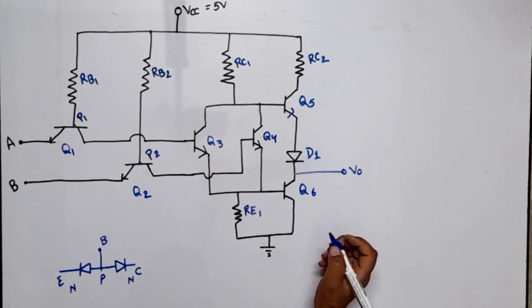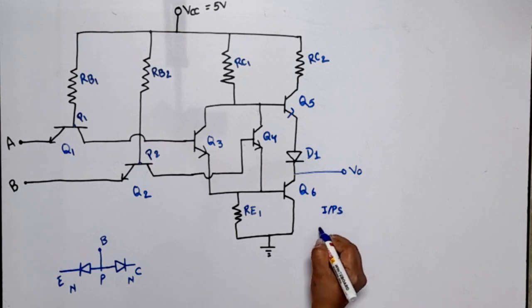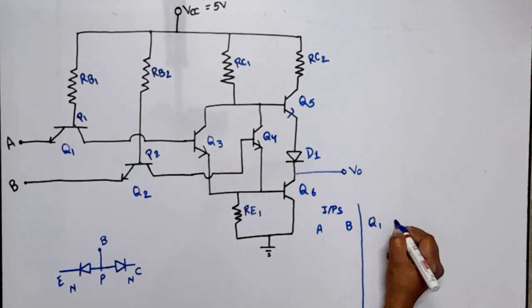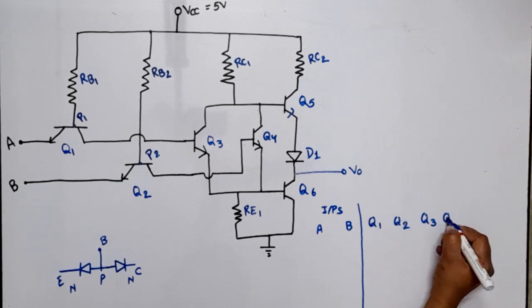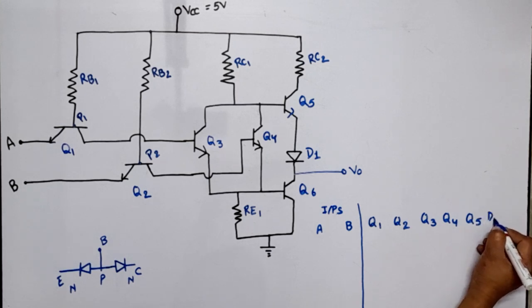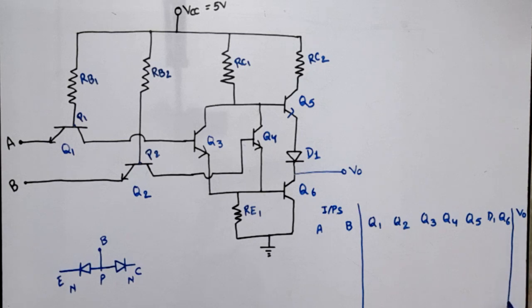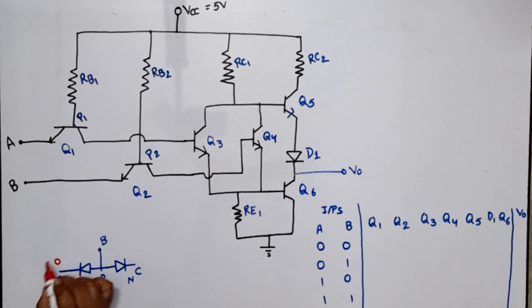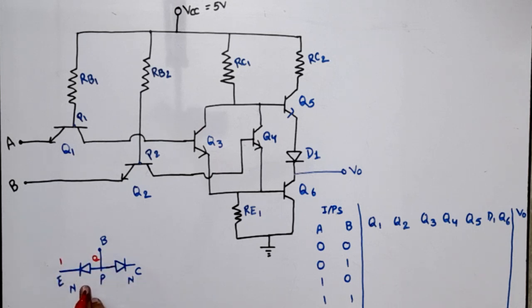Now we will make a summary table. The inputs are A and B, and accordingly we will see the status of transistors Q1, Q2, Q3, Q4, Q5, D1, and Q6, and the final output. The input combinations will be: 0-0, 0-1, 1-0, and 1-1. For an NPN transistor — using its diode equivalent — if we apply 0 at the emitter side and 1 at the base, the diode is forward biased. If high is applied at the emitter and low at the base, the diode is reverse biased.